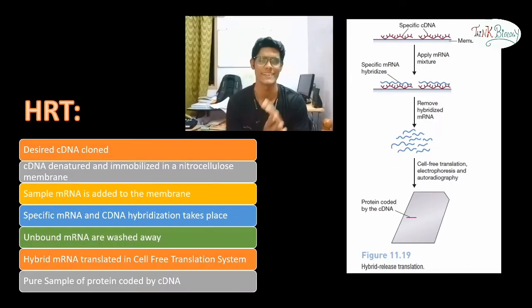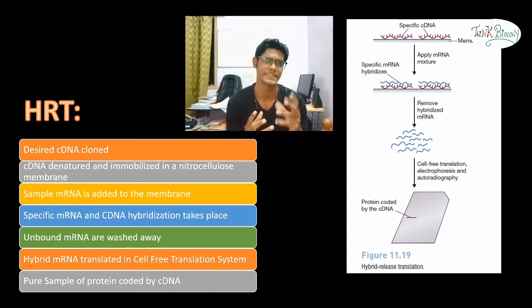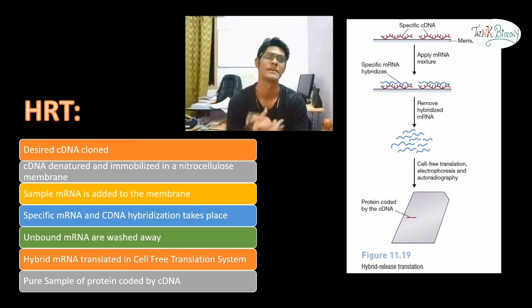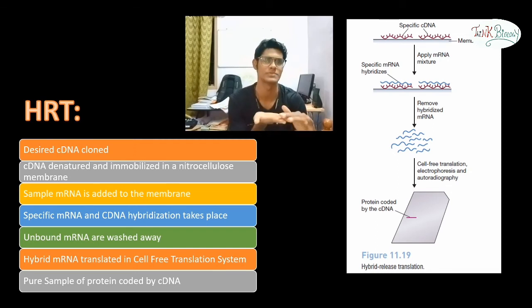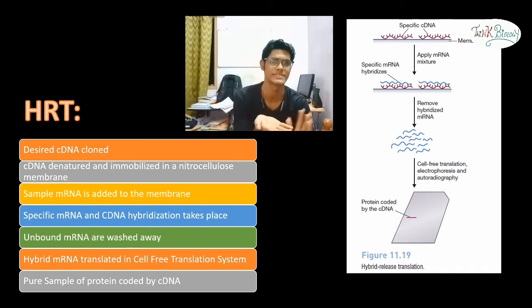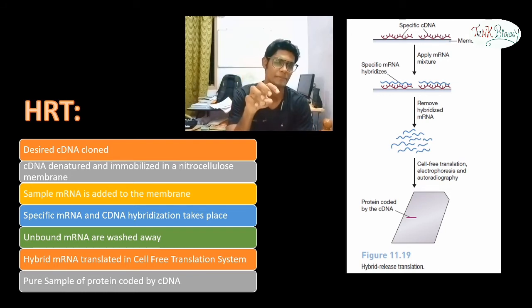Now let's look at the procedure for HRT. First, we take a desired cDNA clone. cDNA is complementary DNA produced from mRNA using reverse transcriptase enzymes. This cDNA is denatured and immobilized on a nitrocellulose membrane. Then we add the sample mRNA to this membrane so that specific mRNA and cDNA hybridization takes place.